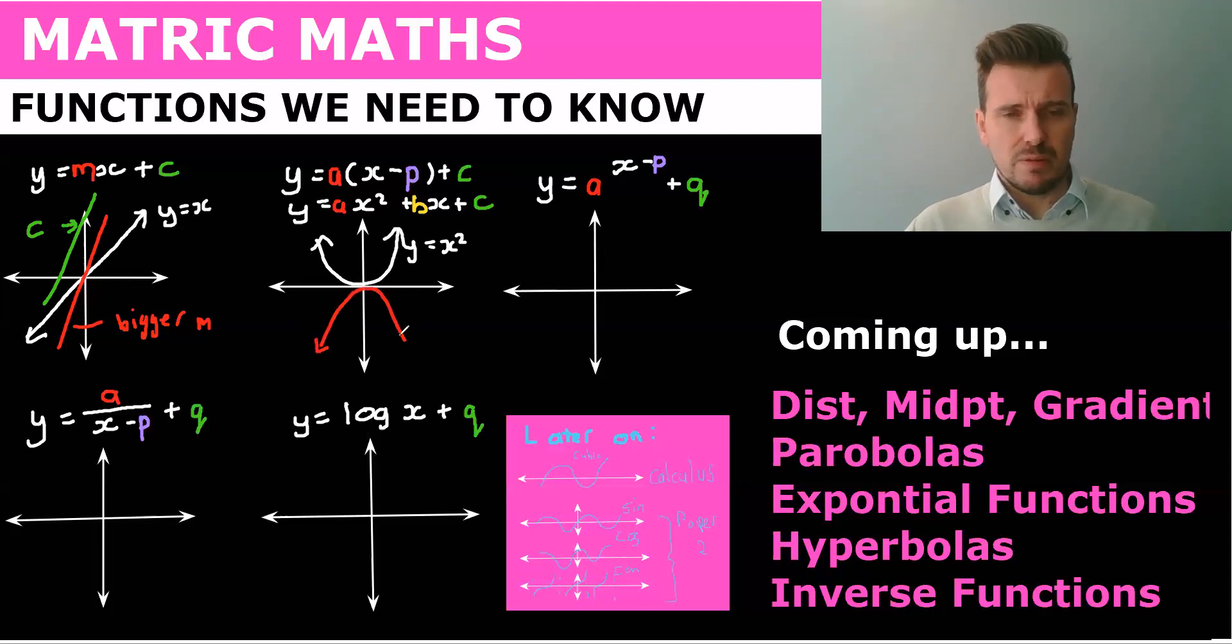And so if you have a negative a x squared you have a sad face. So this would be negative x squared. Okay again your c would shift it up. So if I had a c that would shift the graph up to c.